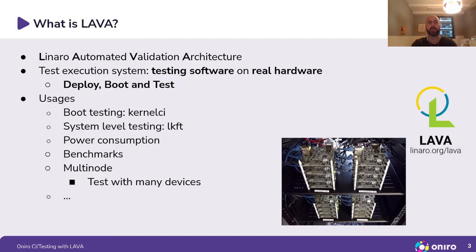On the other hand, we've got Lava. So what is Lava? It stands for the Linaro Automated Validation Architecture. It's essentially a test execution system — we're testing software on real hardware. We achieve that with three basic steps: deploy, boot, and test.